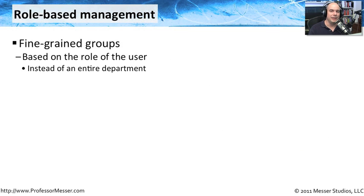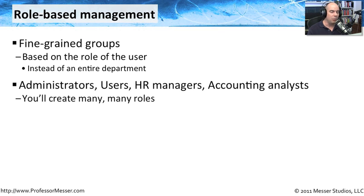Role-based management takes this idea one step further, setting very fine-grained controls for what people do in the organization. Instead of a big marketing group, you might have a field marketing group and a technical marketing group. Those two people are in the marketing department and have the same marketing rights, but you break them out to have different controls for their specific roles within the organization.